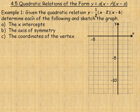In the first example on this page, we're given the quadratic equation y equals one-half times x minus 2 times x plus 6. This is in the factored or intercept form. We're asked to find the x-intercepts of this graph. The x-intercepts are places along the x-axis where the graph crosses it, and on the x-axis, y is 0.